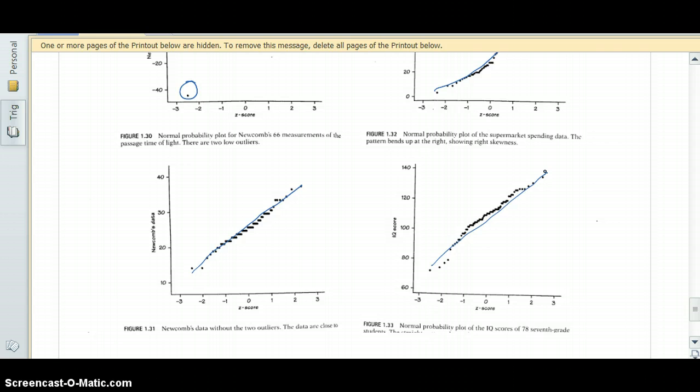And so then the next thing we're going to do is use our calculators to figure out how to transform the data if it's skewed to begin with to make it look approximately normal.